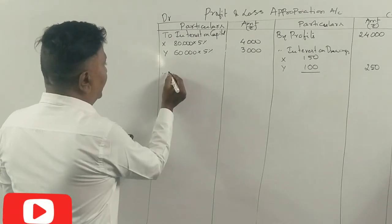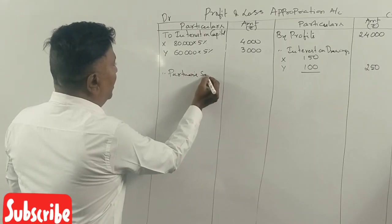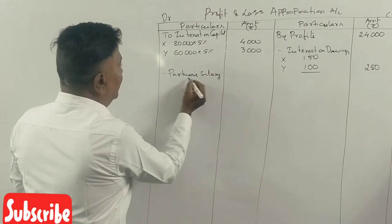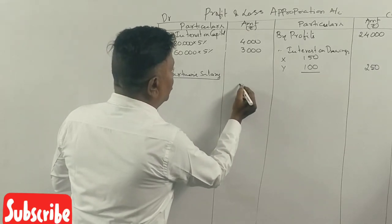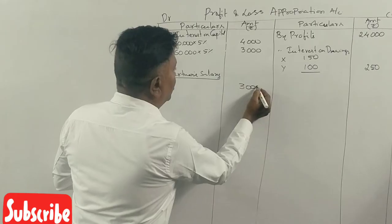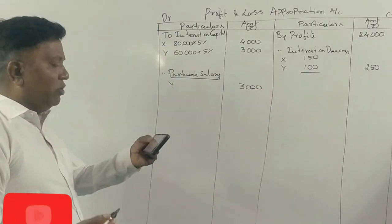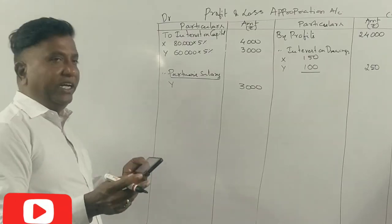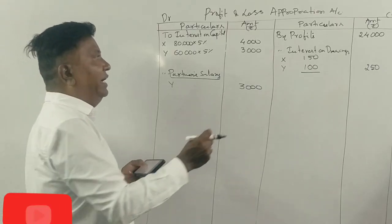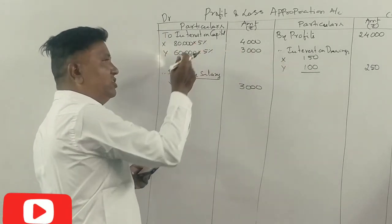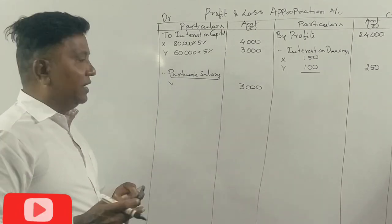Y is the salary of the partner — salary has been given. So the partner's salary: your partner's salary is Rupees 3000. The partner's salary is equal on the debit side. This is not a bad adjustment. If you are considering interest on capital, you will have the partner salary on the debit side.